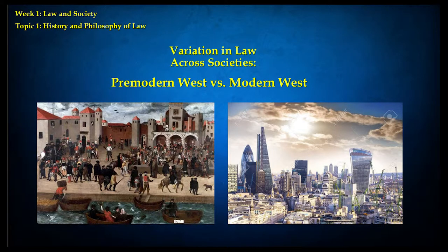In our last lecture, we discussed variation in law across societies. Different societies have different legal rules and procedures. By different societies, we could mean the same society over different historical periods, because England or France or Germany or America nowadays is a very different society than any of those countries 300 or 400 years ago. So let's compare the pre-modern West — Europe and England in the Middle Ages and Renaissance — to the modern West today.